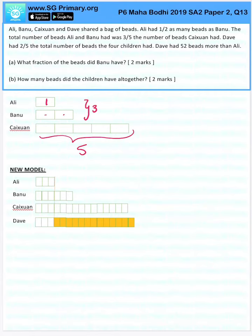Dave had two-fifths the number of beads the four children had. So Dave had two units and the rest of the three of them had three units. So there are a total of eight units here.